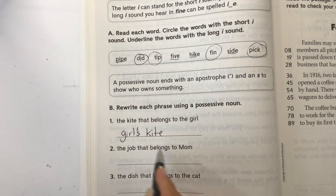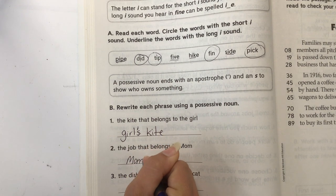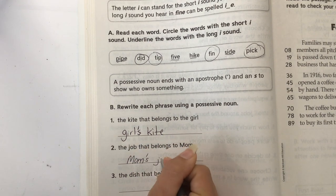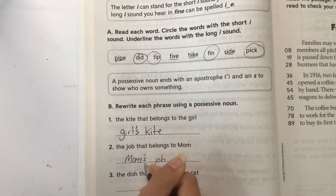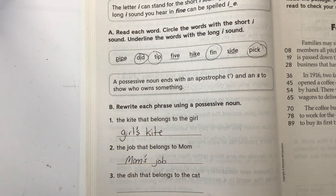The job that belongs to mom. So that would be mom's job. Apostrophe S means the job belongs to mom. There is still only one mom.